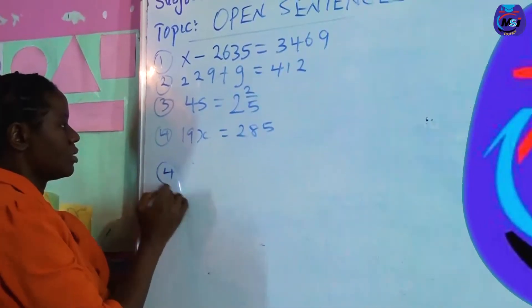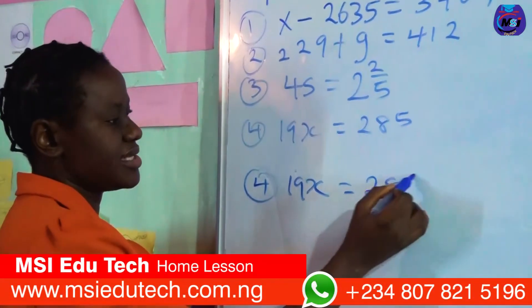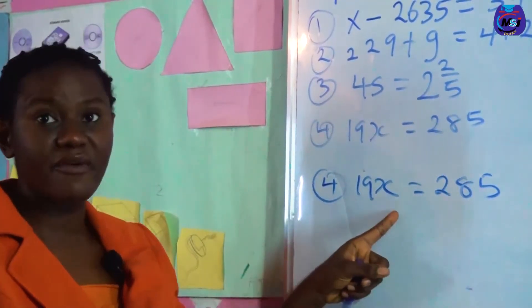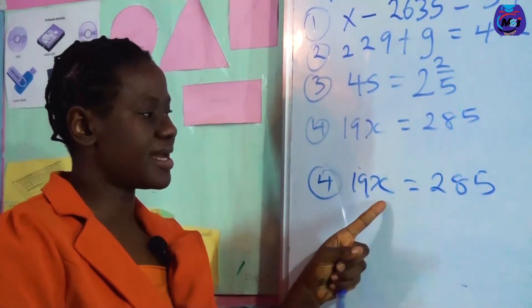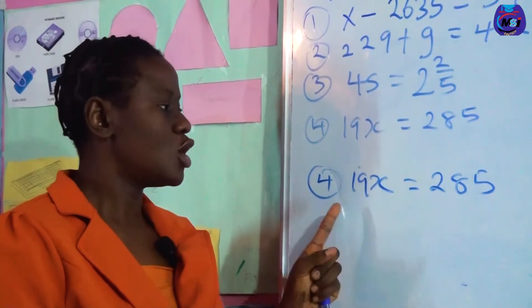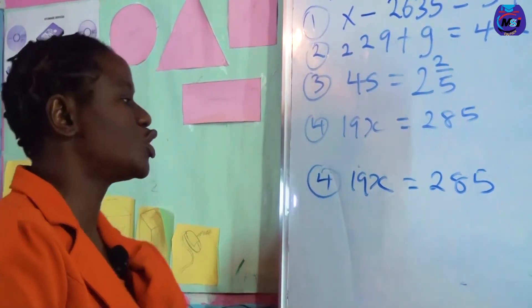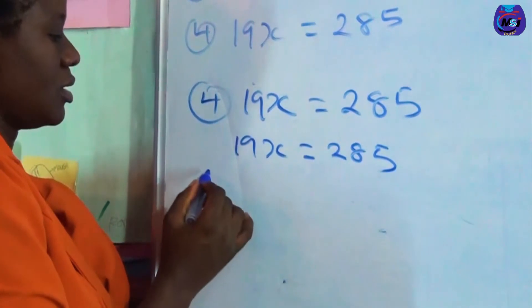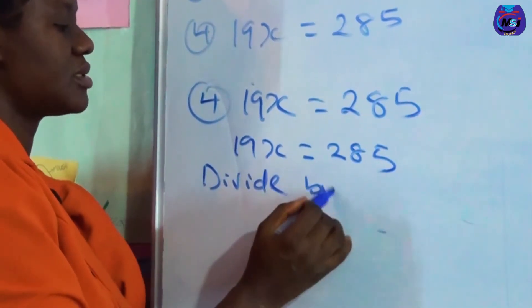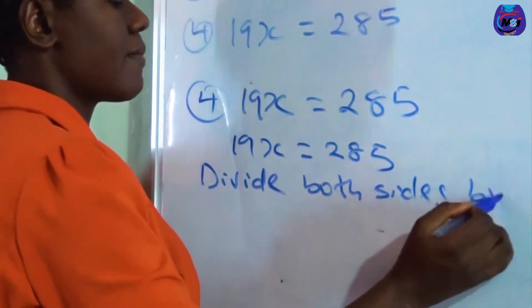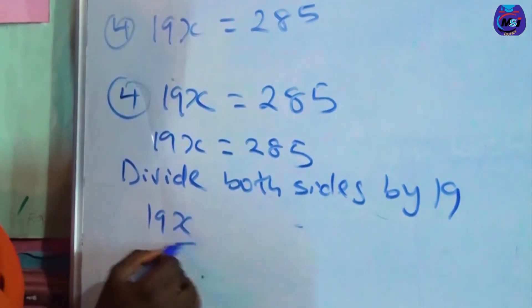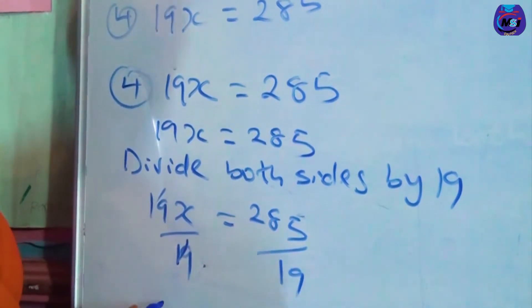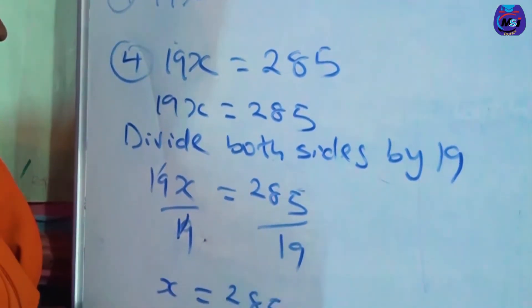The last example: 19x equals 285. We are looking for x. Now we need x to stand alone, but there is a 19 standing with x, so we need to do something to take away this 19. We need to divide both sides by 19. So 19x equals 285, divide both sides. 19x all over 19 gives us 285 all over 19. 19 crosses out 19, so we are left with x. x equals 285 divided by 19.